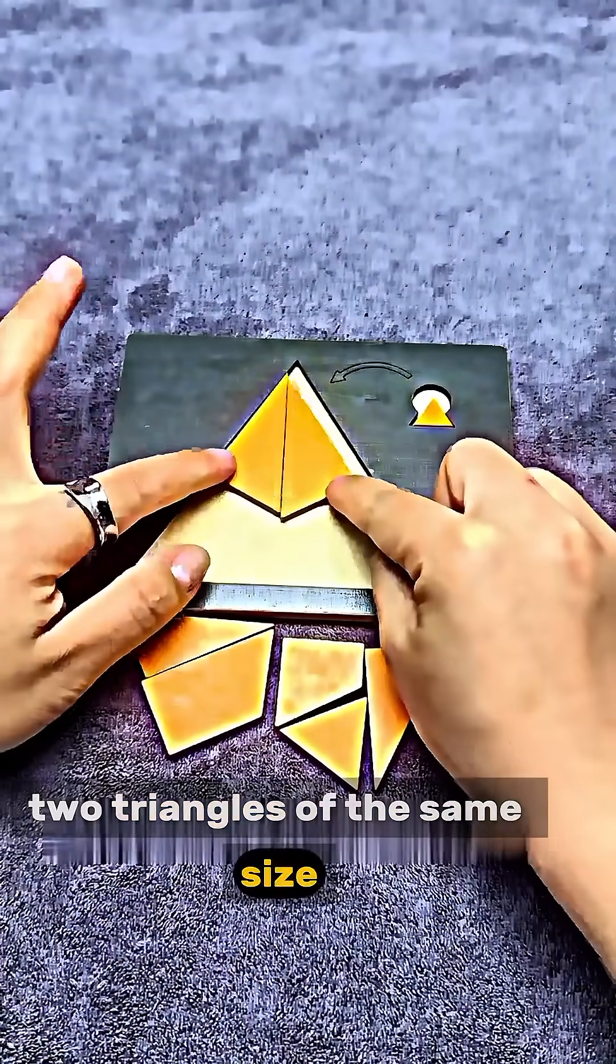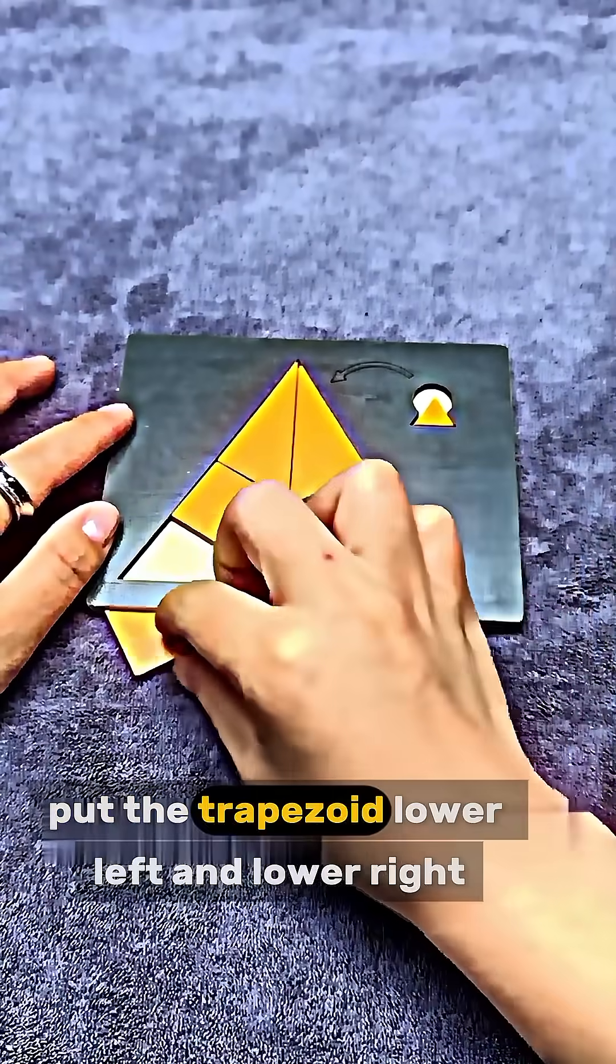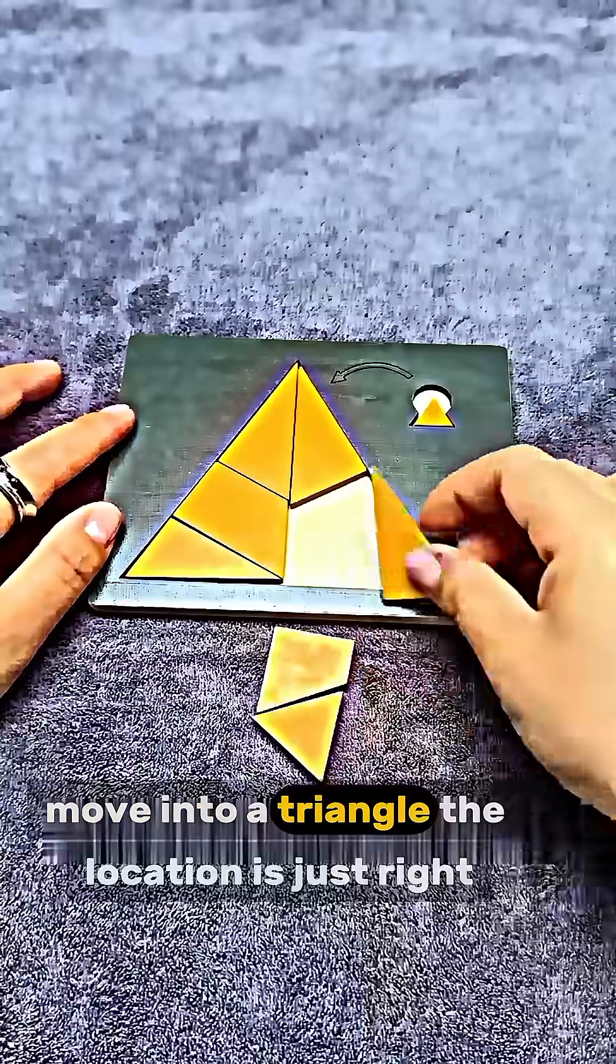Think to make some room and then put it back together. Two triangles of the same size, put it on top of the puzzle. On the left, put the trapezoid. Lower left and lower right, move into a triangle.